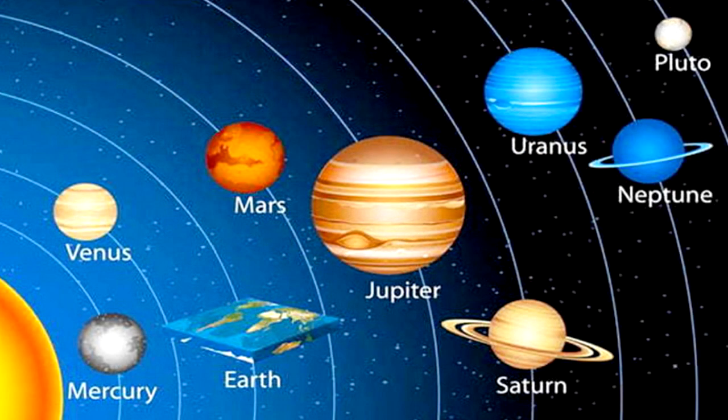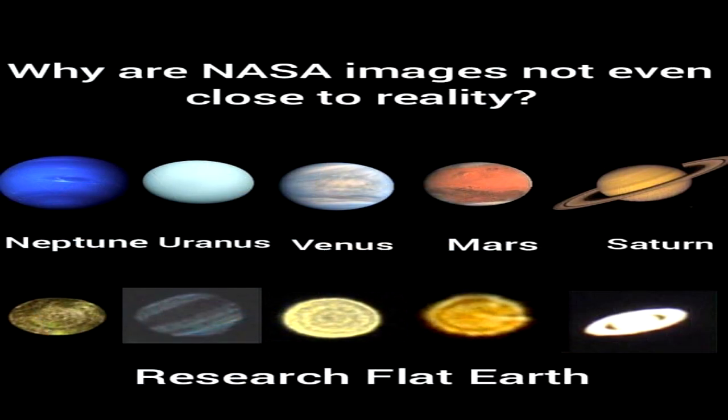When making this argument online, globe-earthers will often present a picture of the traditional heliocentric model with eight spherical planets and a flat Earth among them floating in space. This entire concept is a straw man, however, as no flat-earthers believe in a flat planet floating in space third from the Sun in a heliocentric solar system.